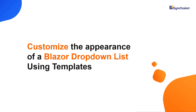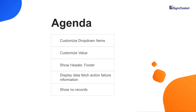Hi everyone, welcome to this video on how to customize a Blazor dropdown list using templates. In this video, I will explain how to customize the appearance of dropdown items, values, header, footer, and finally I will show how to display data fetch action failures and show no records information using template. Let's dive right in.